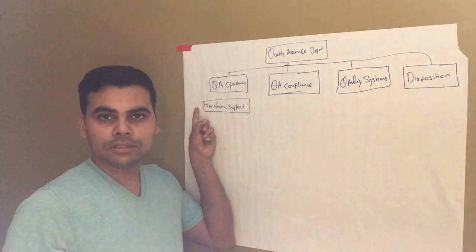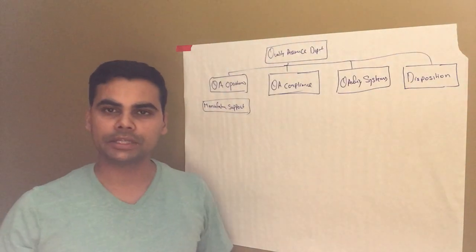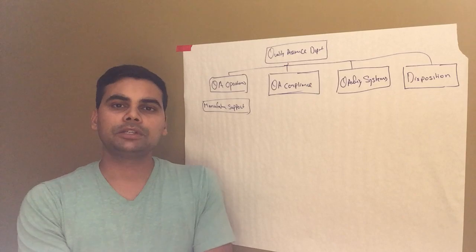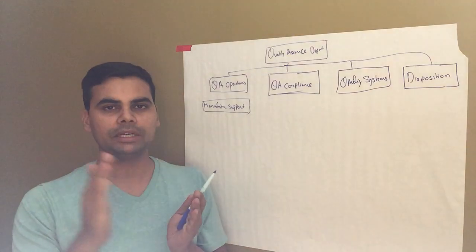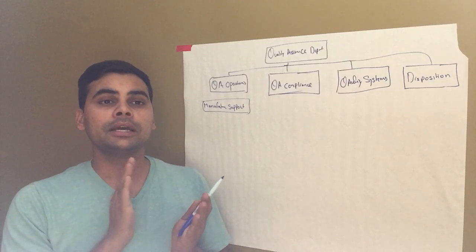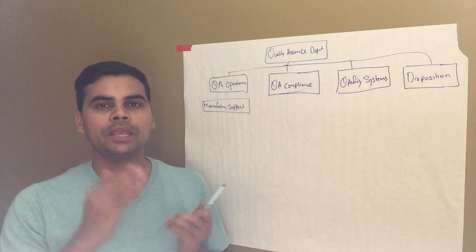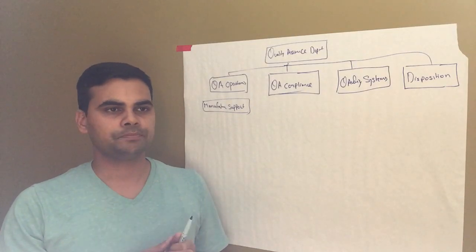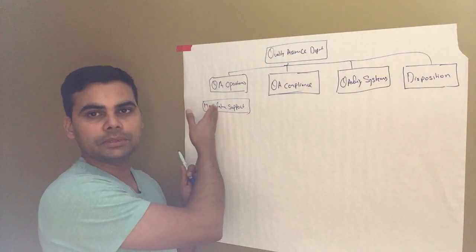So these guys who work on QA operations department, they support the manufacturing operations, means they make sure that whatever we are manufacturing is in alignment with the good documentation practice, is in alignment with the good manufacturing practice, all the in-process samples have been withdrawn, whether there is any deviations, missing entries - first point of contact are these people.